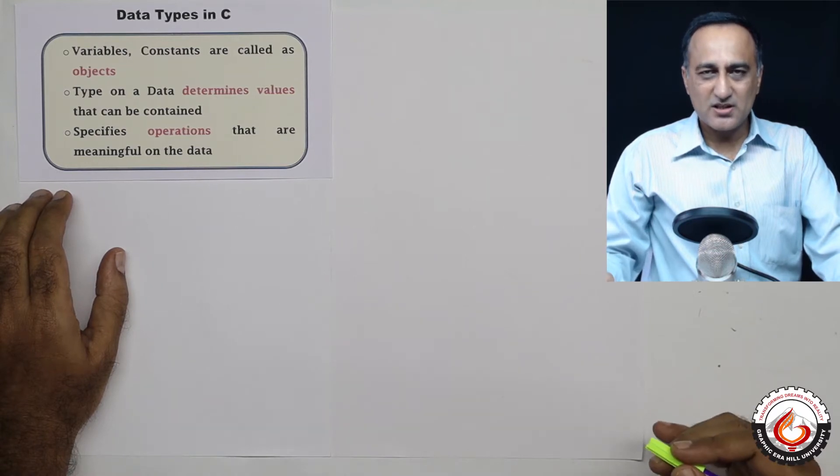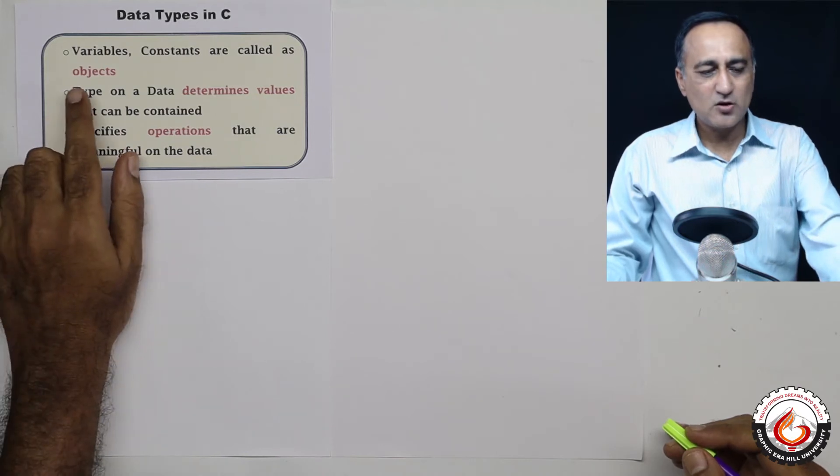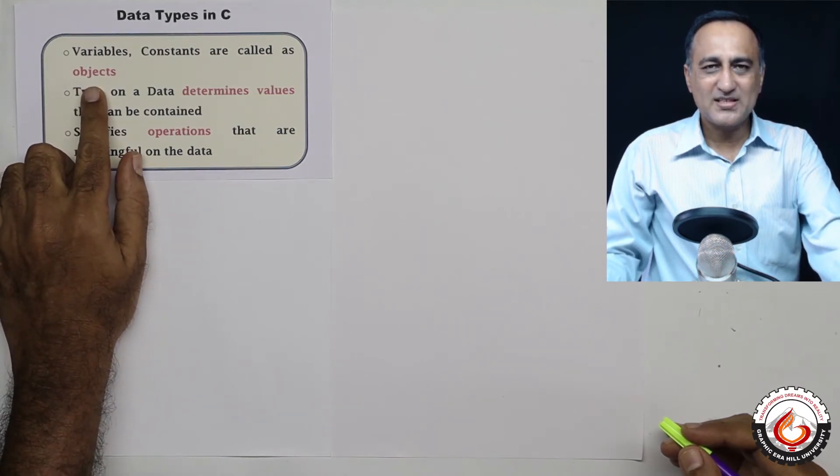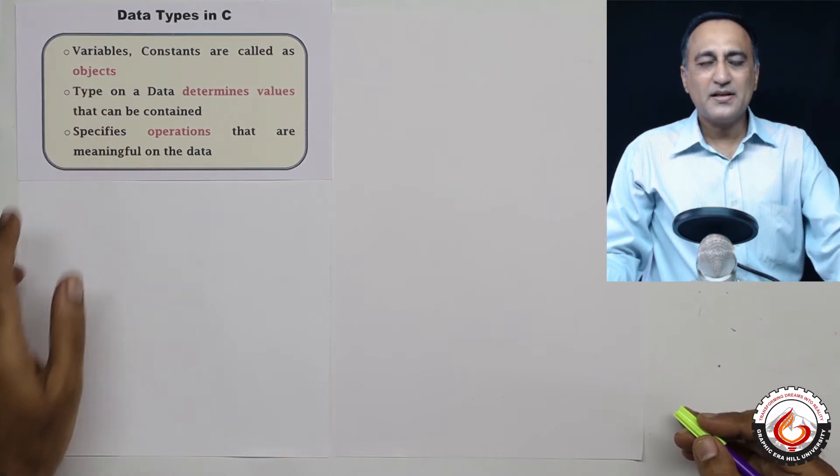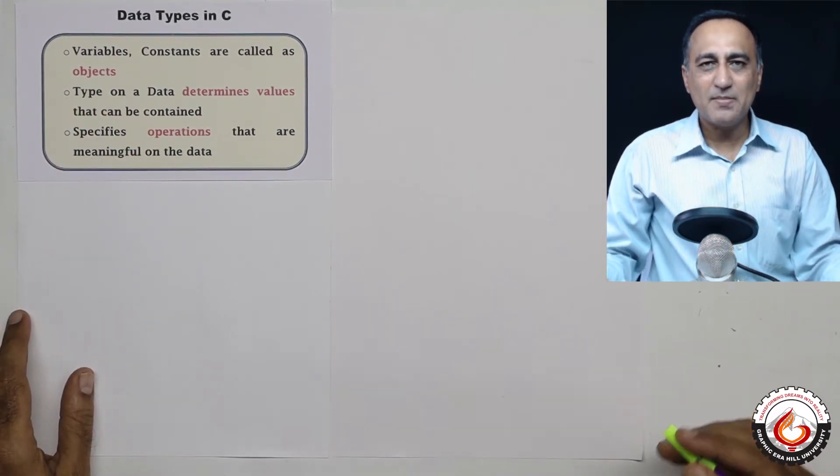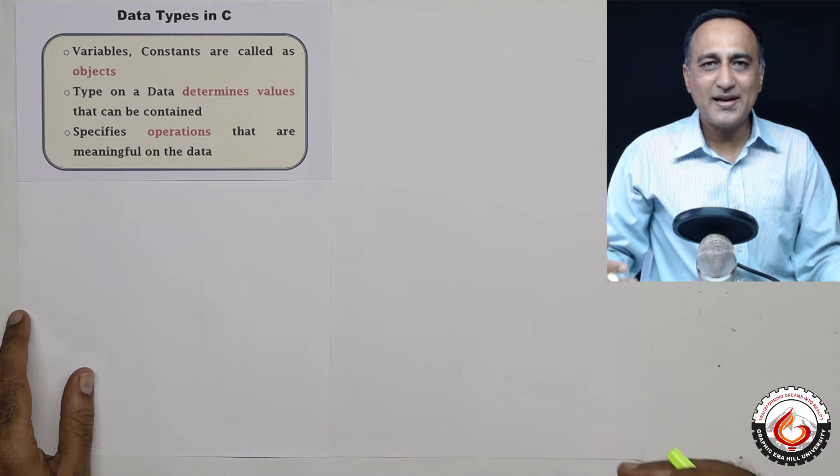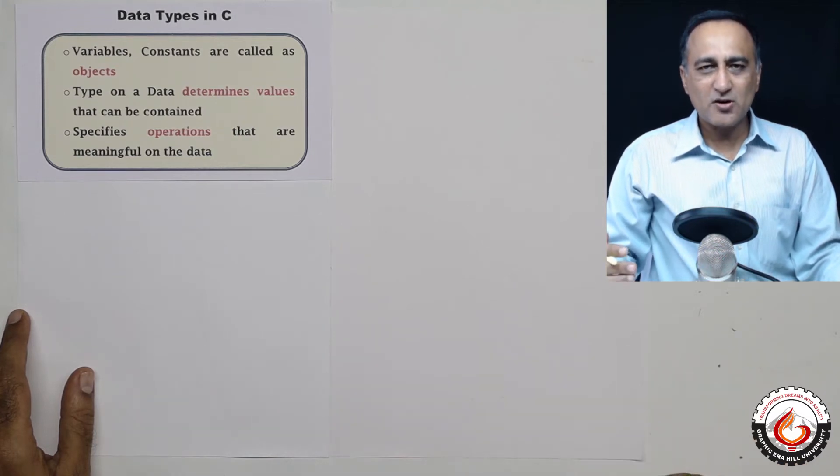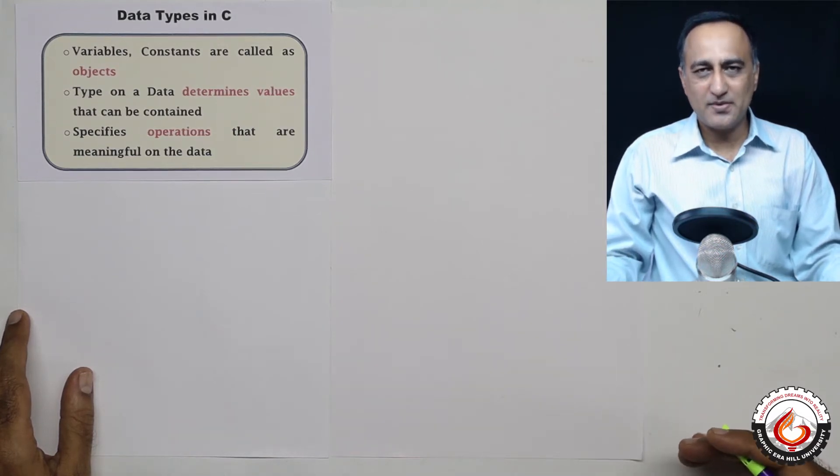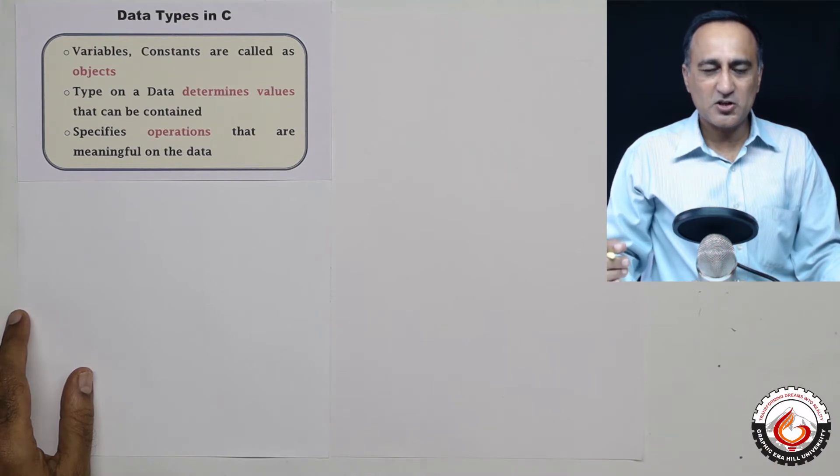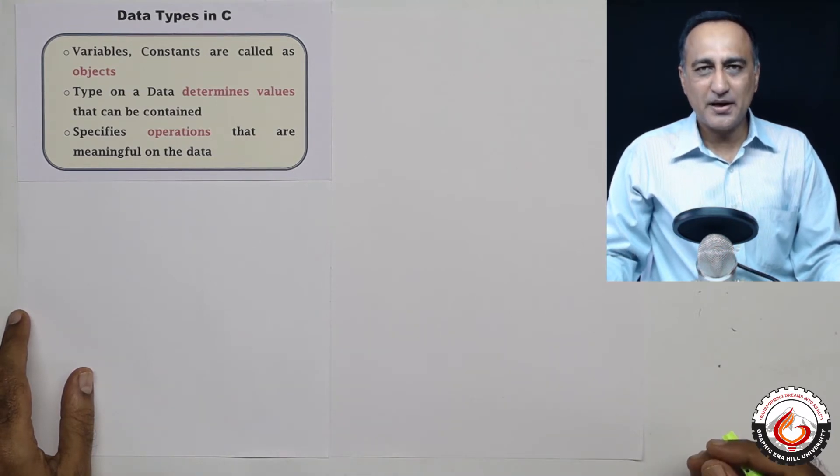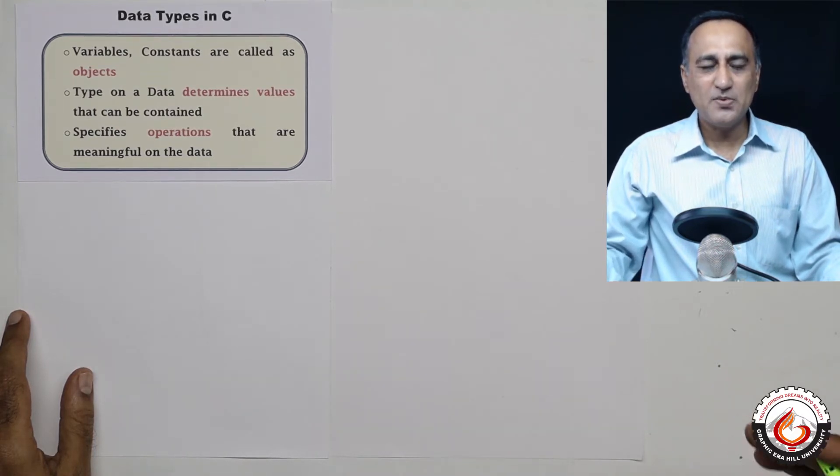Variables, constants, functions and a few other things are known as objects. When I say an object, I could be talking about a variable or a constant. A variable is a memory location whose values can change. A constant is also a memory location except that it does not change. An example of a constant is pi, 3.142. An example of a variable could be a person's address which can keep changing.